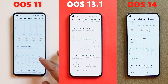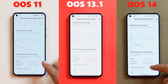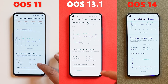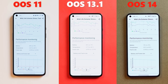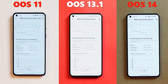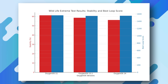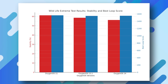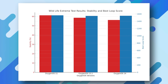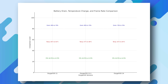On OxygenOS 14, stability scores were 56.2 percent, best loop score was 1,551, lowest loop score was 872, battery drain was from 79 to 70 percent, temperature rose from 25°C to 45°C, and frame rate was between 4 to 14 fps. In the Wildlife Extreme test, OxygenOS 11 seems to perform better overall, showing higher stability scores, higher best loop scores, a reasonable temperature increase, and a balanced frame rate.